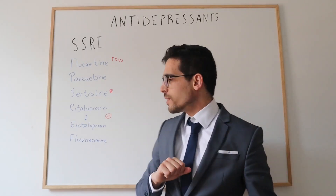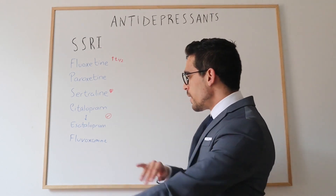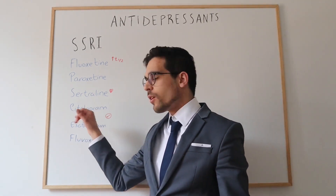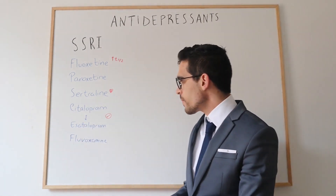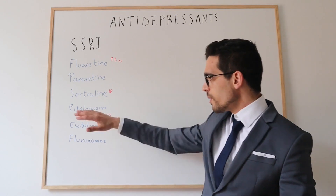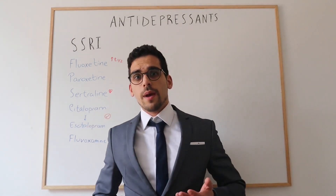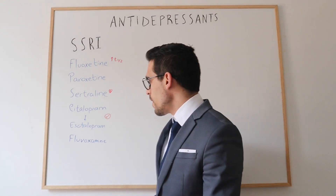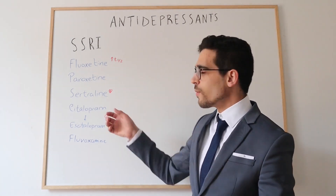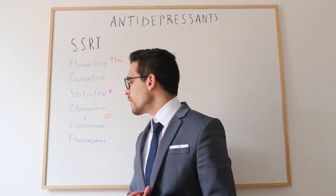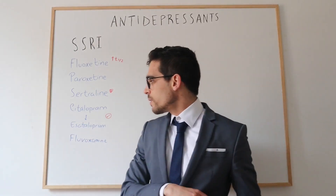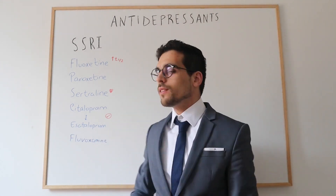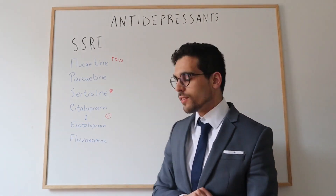Citalopram and escitalopram. Escitalopram is essentially just an enantiomer of citalopram. These two are considered by many psychiatrists to be the first-line agents because they are the best tolerated, and especially escitalopram, which is the cleanest one in terms of drug interactions.